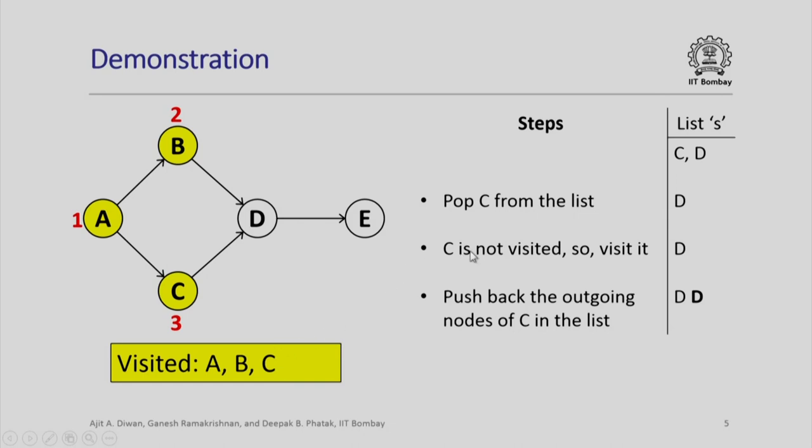Next, we pop from the list. Again, C will be popped and not D because this is a queue, so popping will happen from C. Since C is popped, only D remains on the list. Since C is not visited, we will visit it, C has only one outgoing edge D and therefore, D will get inserted on the list. Notice that the list contains now D twice, once because it was already there earlier and next because C has an outgoing edge to D and therefore, that will get pushed back onto the list. Please note that the visiting order is A, B and C so far.